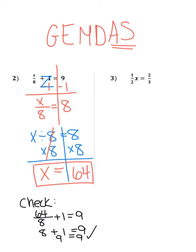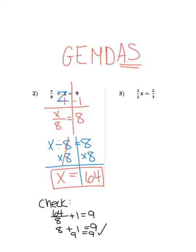All right, moving on to number three. Let's draw a wall to separate the left and the right side. Now, this one is a little bit different. This says one half times X equals two thirds.